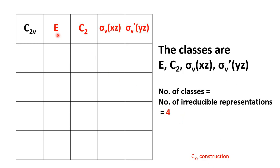The classes are written in the top row: E, C2, σv(xz), and σv'(yz). The irreducible representations are written and labeled as 1, 2, 3, and 4.